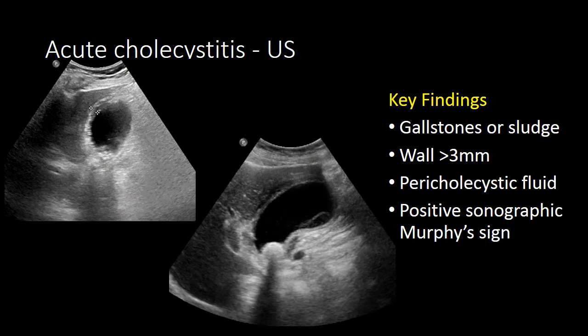When assessing a patient for cholecystitis with ultrasound, you are looking for a few key findings. First, you want to confirm the presence of stones or sludge within the gallbladder. You then want to assess the gallbladder wall for any evidence of thickening or inflammation. The presence of fluid around the gallbladder can also be a sign of an inflamed gallbladder.